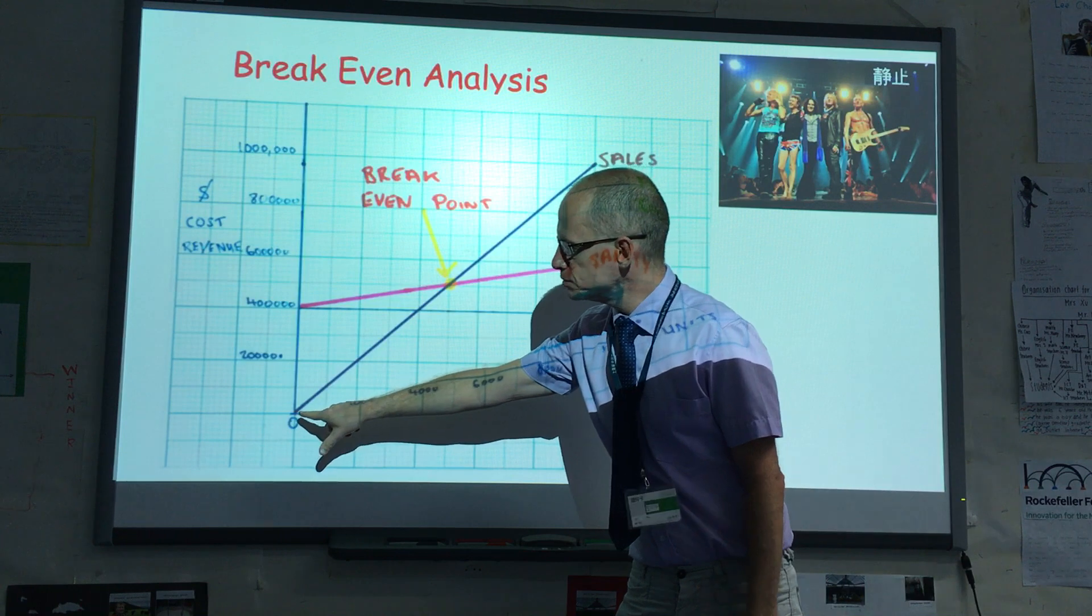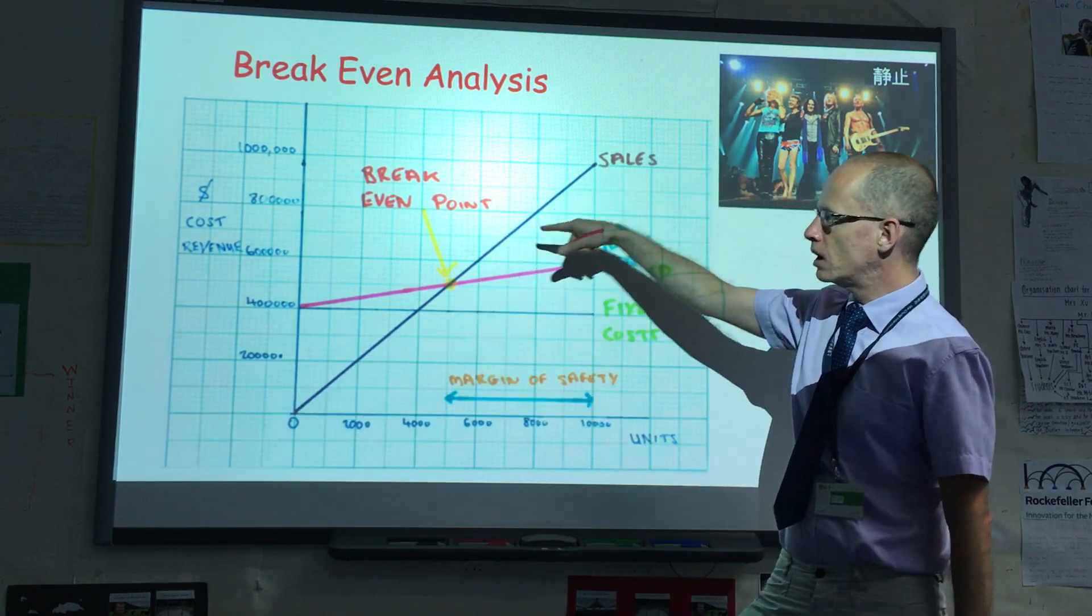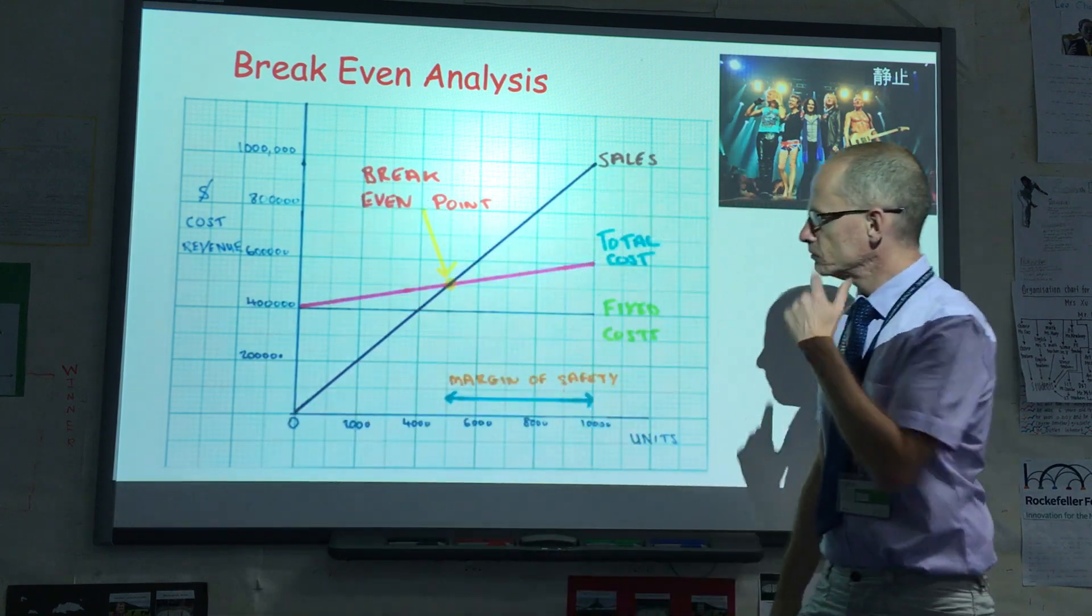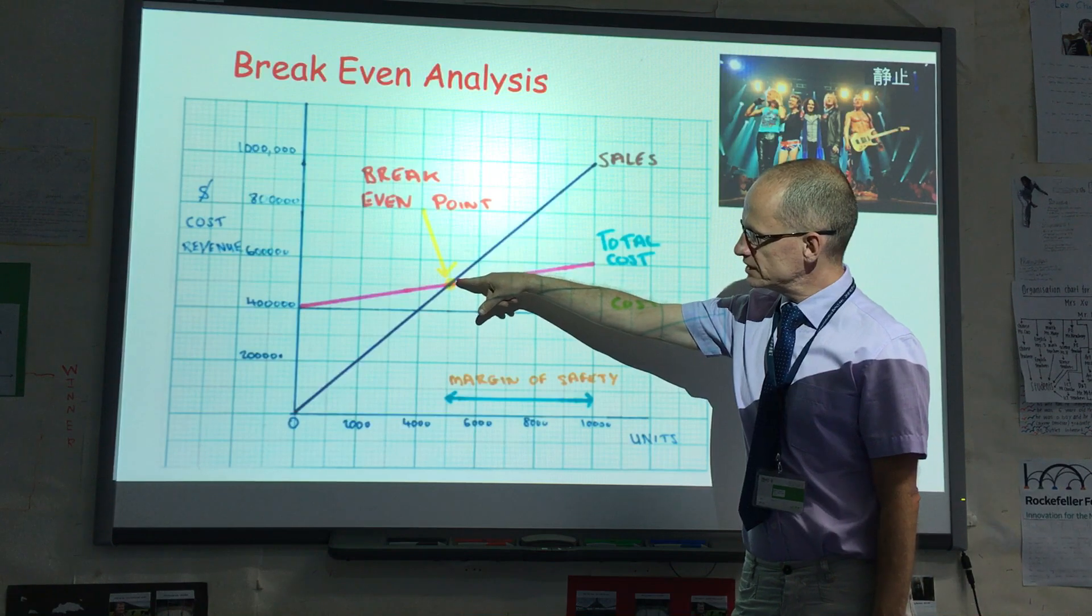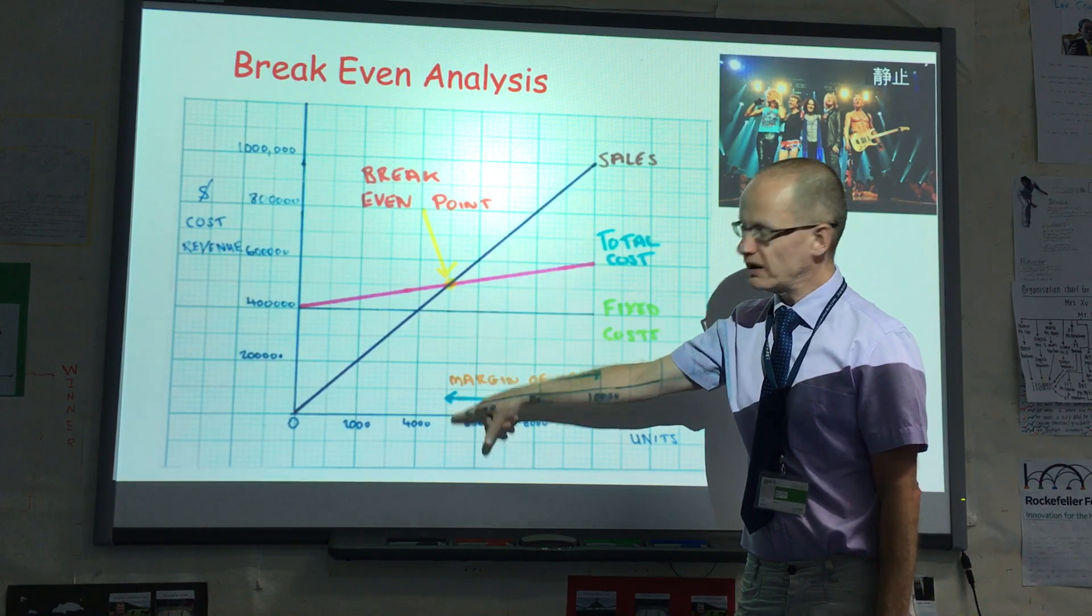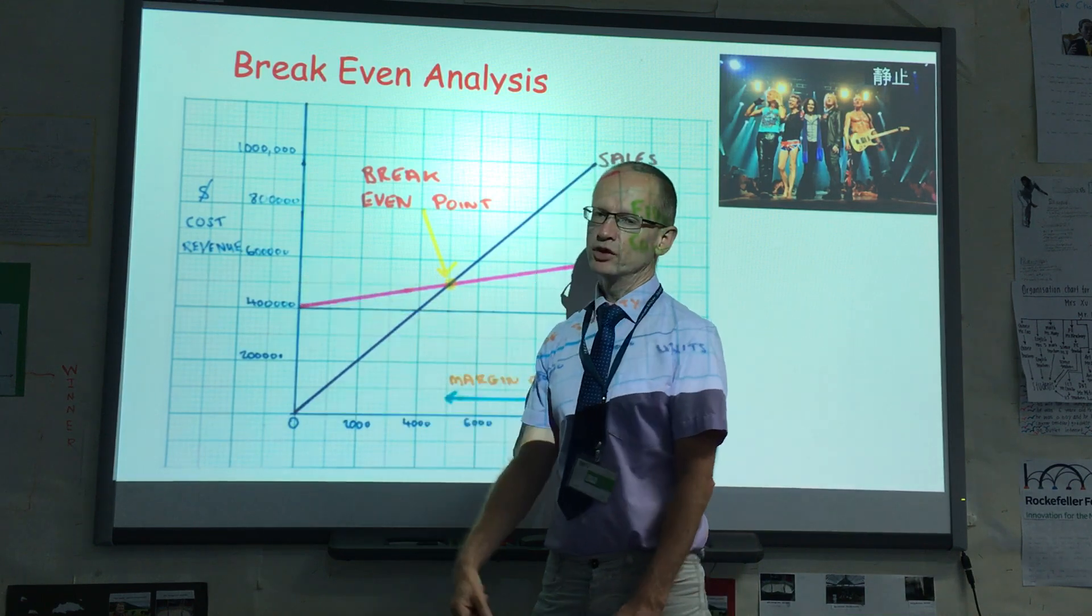Now, $100 per ticket times 10,000, that goes all the way up the straight line to $1 million. This is the break-even point. The break-even point is approximately 5,000 units or tickets, and the break-even revenue is $500,000.